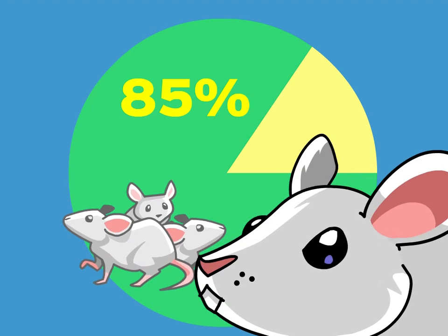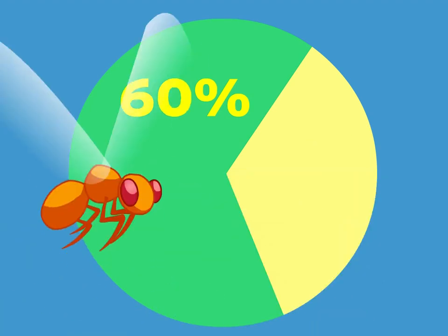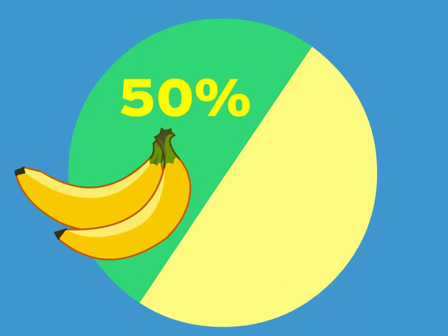But we also share 85% with mice, 60% with fruit flies, and 50% with bananas.